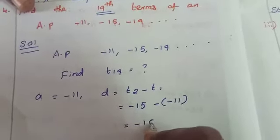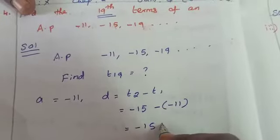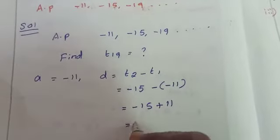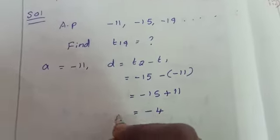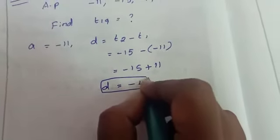This is equal to -15 minus of minus plus 11. So add -15 and 11, answer is -4. That is, d equal to -4.